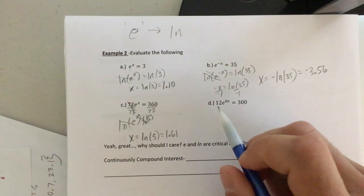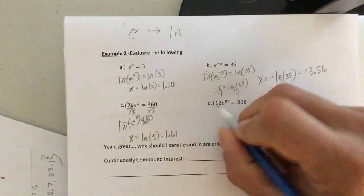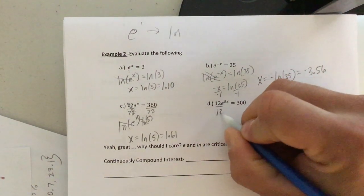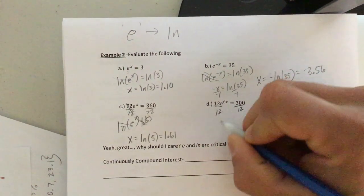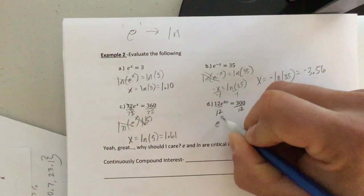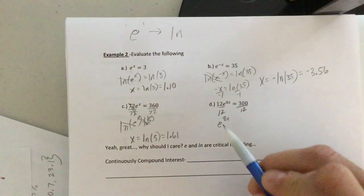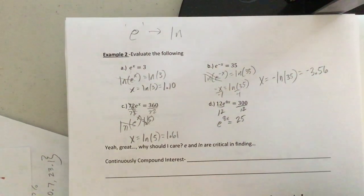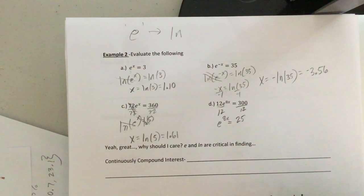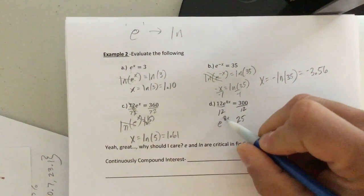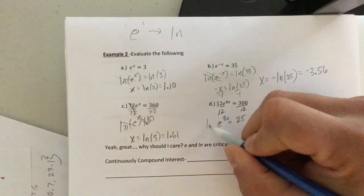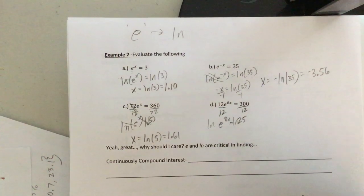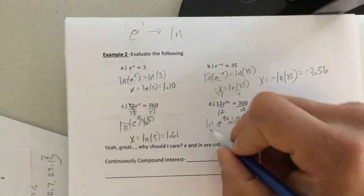Last but not least, letter D. Very similar to C. We're going to divide both sides by 12. Okay. When we do that, we get E to the 8X. That's new. We'll wait on that. Equals 25. Okay. Now, we'll deal with that 8X in a moment, but we still have to take the natural log of both sides. Okay.